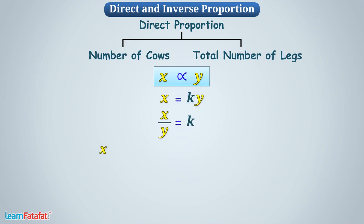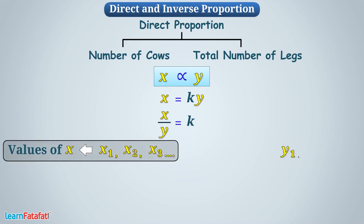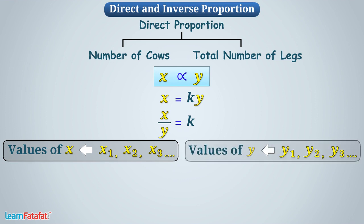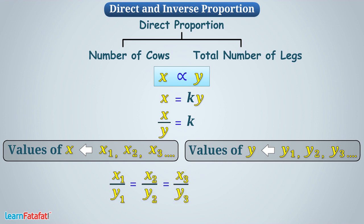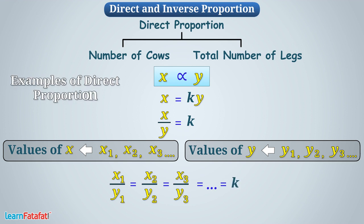If X1, X2, X3, etc. are values of X, and Y1, Y2, Y3, etc. are values of Y corresponding to values of X, then we can write X1 by Y1 is equal to X2 by Y2 is equal to X3 by Y3, and so on, which is equal to K. Can you give some examples of direct proportion? Think about it.